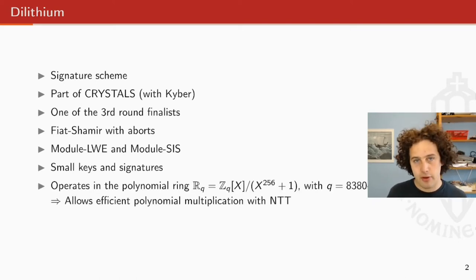The underlying hard problems for Dilithium are the module learning with error and the module shortest integer solution problems. In general, Dilithium, like most lattice schemes, it has pretty small keys and pretty small signatures. And the most important thing about Dilithium is that it generally operates in this polynomial ring, which you see here on the slide, with this special prime Q. The point of using this ring is that it allows very efficient polynomial multiplication using the number theoretic transform.